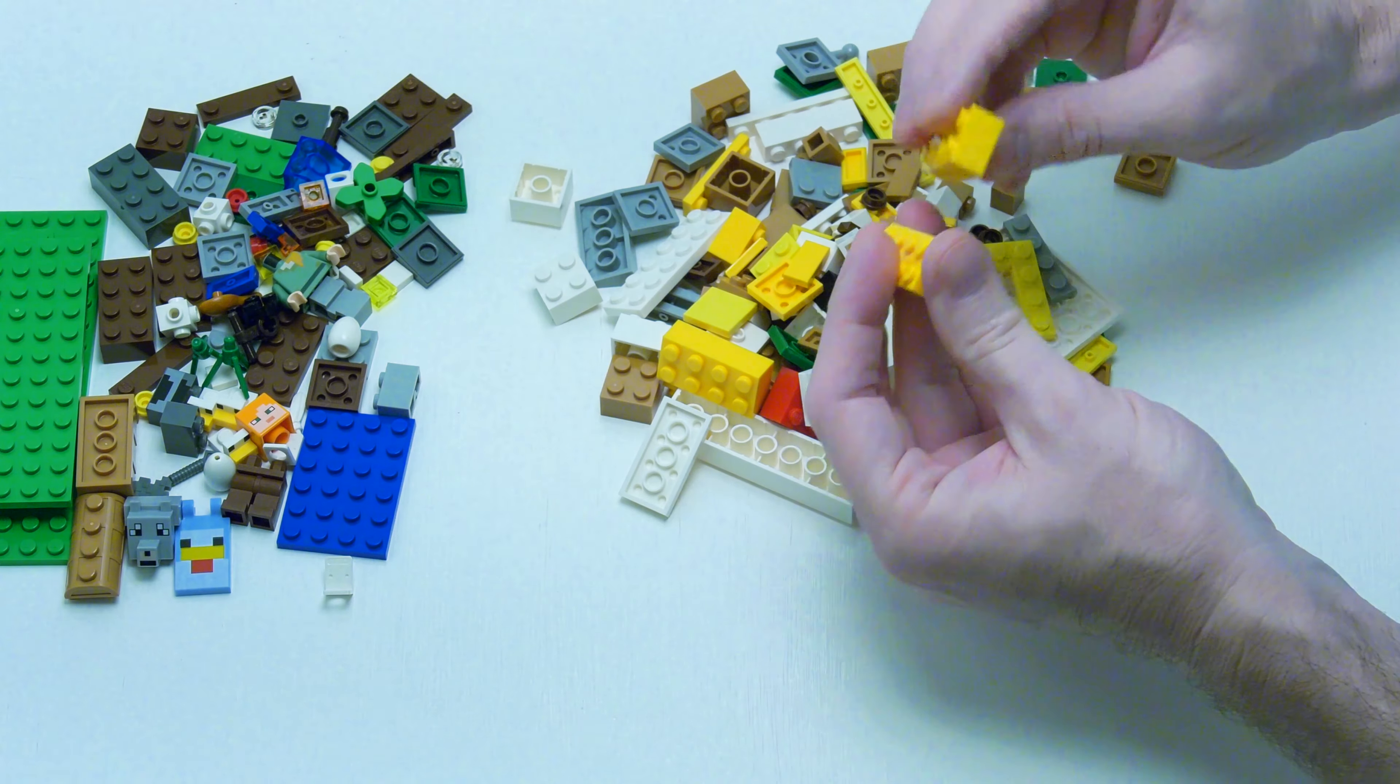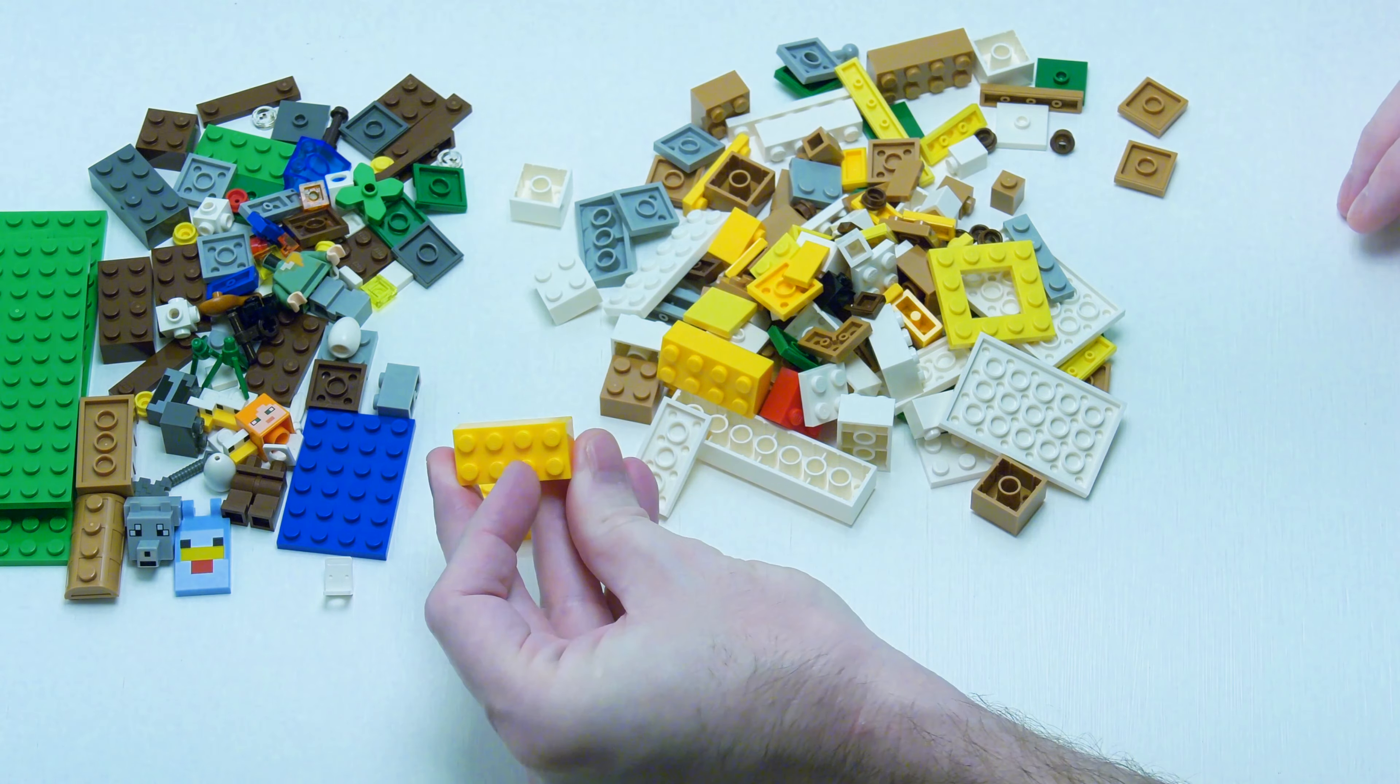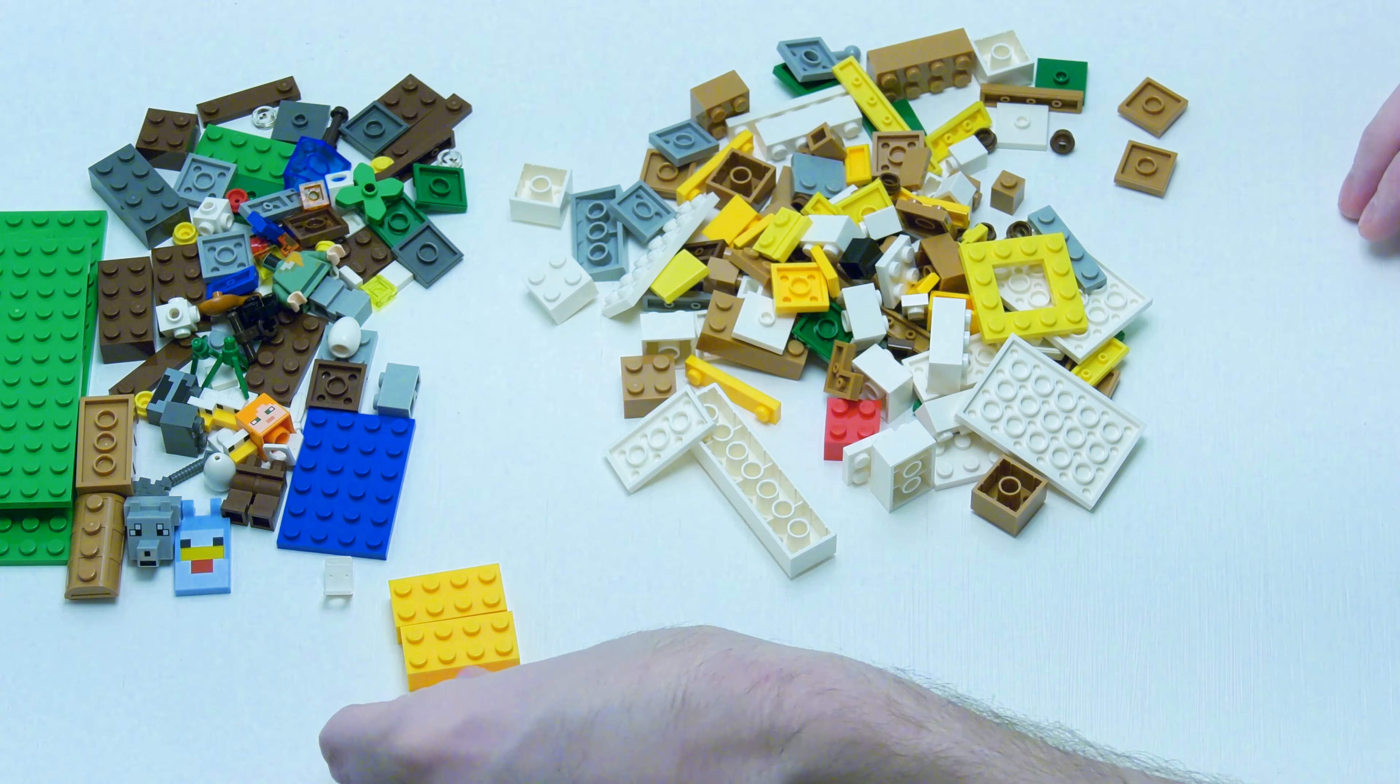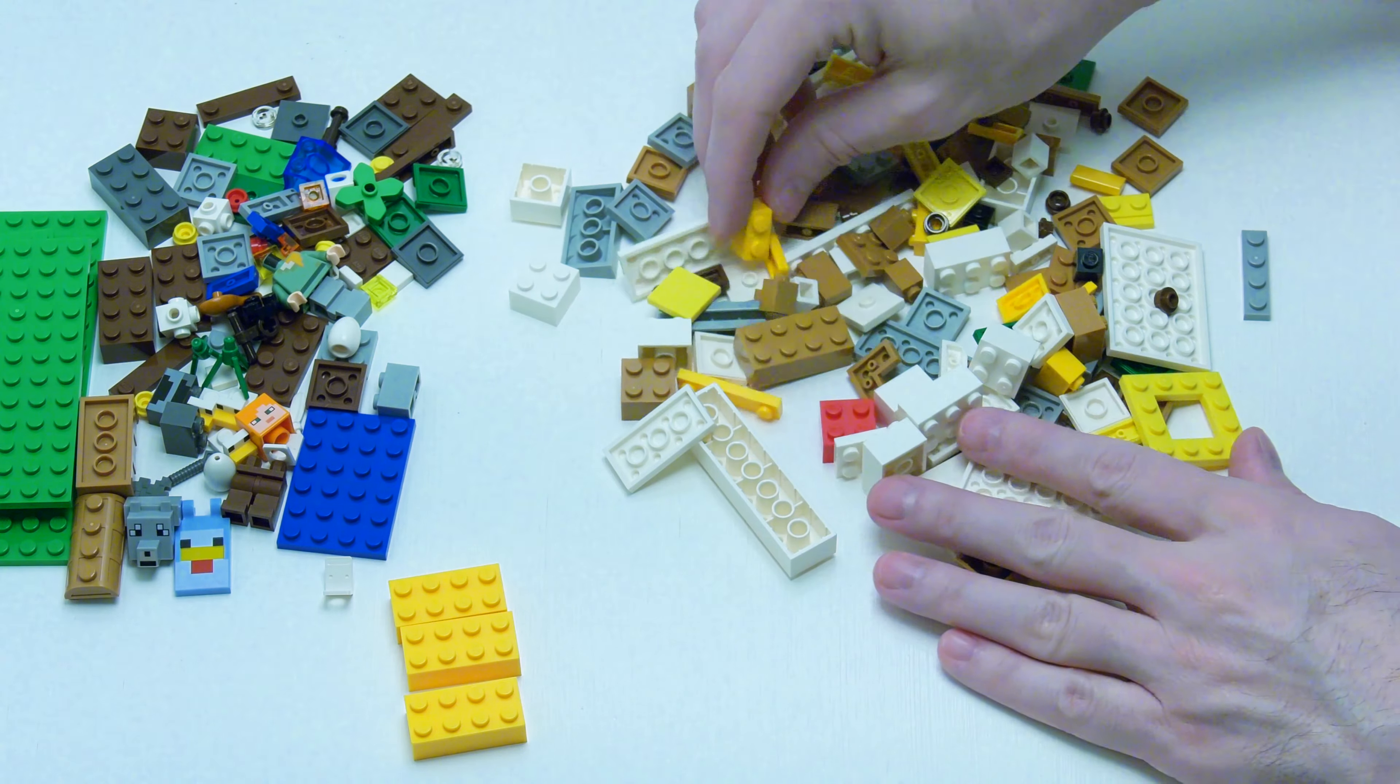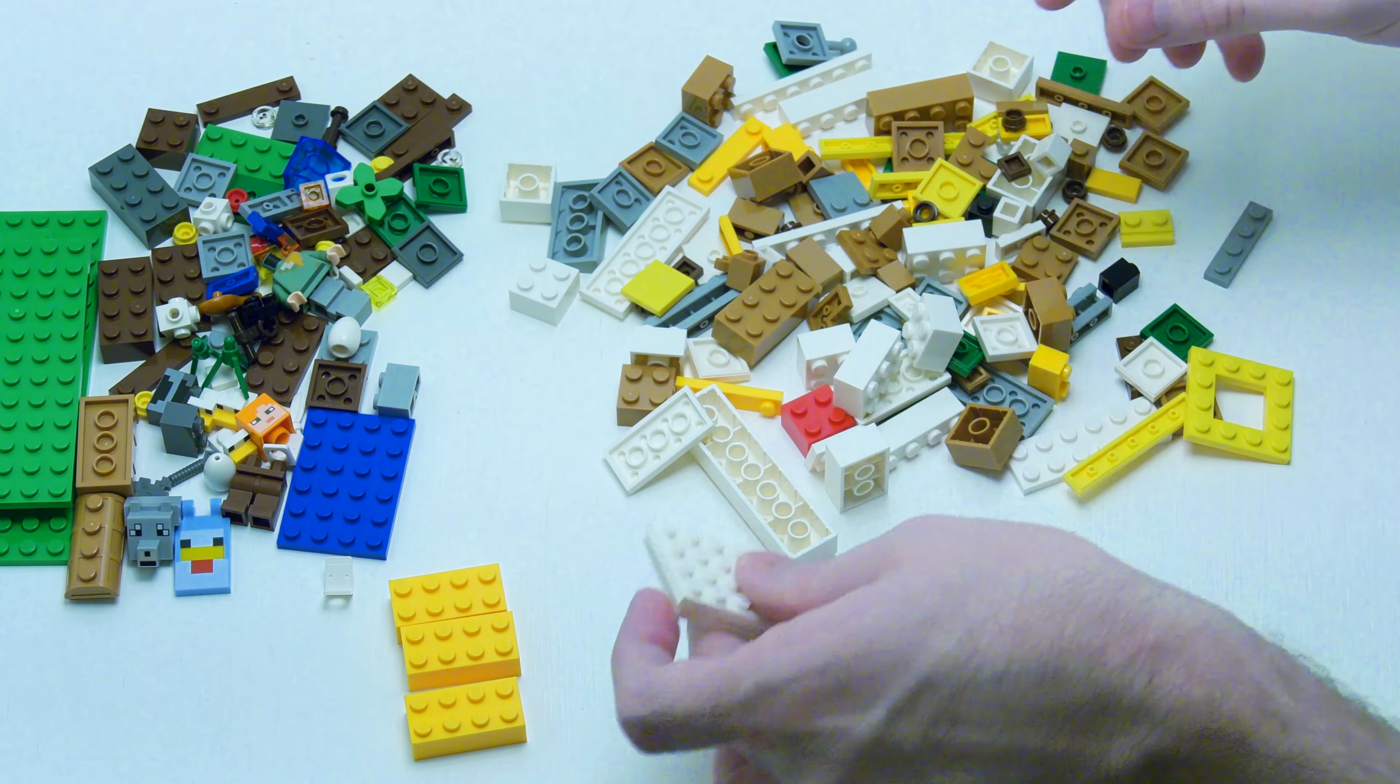I have a couple more of these 2 by 4 bricks. And these look like the bright orange, like the orangey yellow. Looks like we get two of those. My apologies, there's three of those. Let me shoot for four. No.